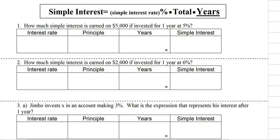The simple interest formula is: simple interest equals the interest rate times the total investment times the number of years. The total investment is also called your principal.